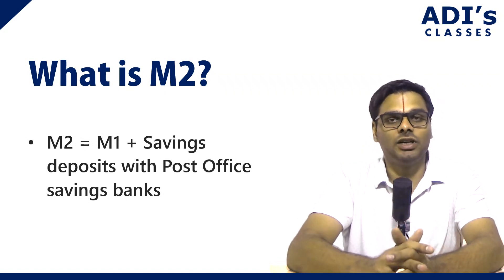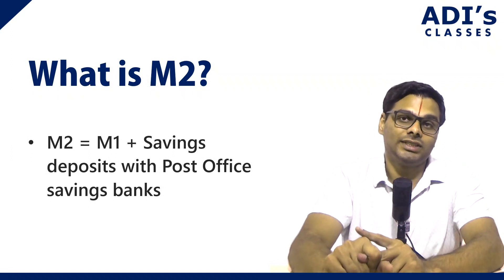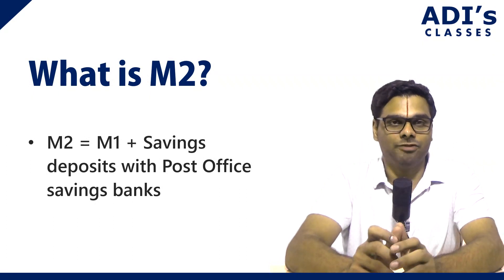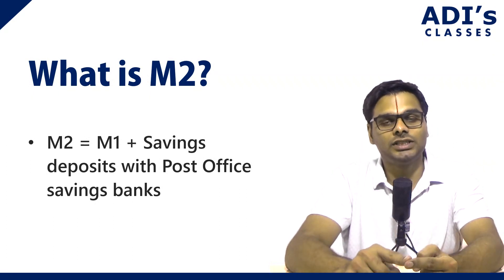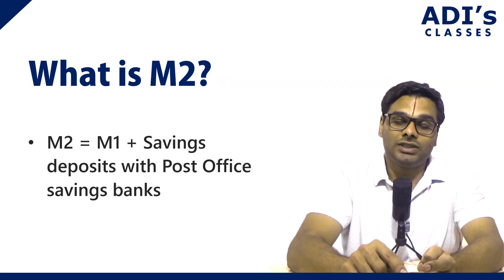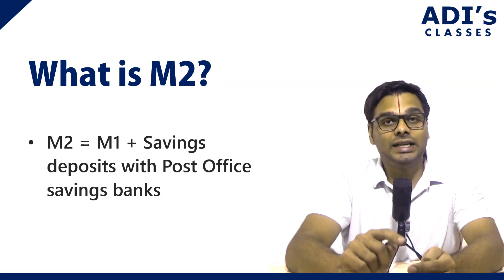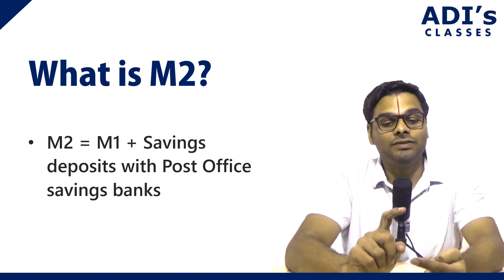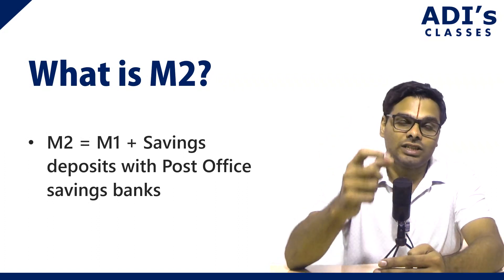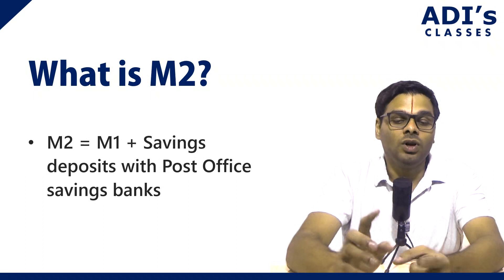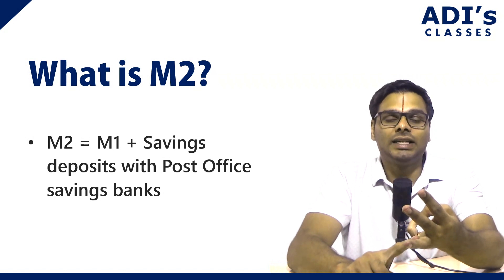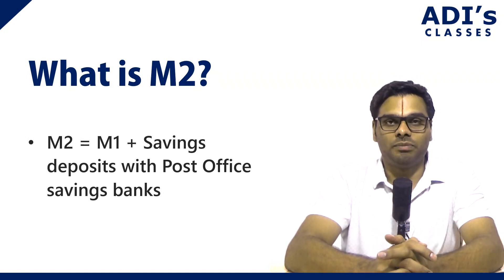M3 is equal to M1 plus net time deposits of commercial banks. So M3 equals CU plus DD plus net time deposits of commercial banks. In M1 we only had net demand deposits of commercial banks. In M3 we have net time and demand deposits of commercial banks plus currency in circulation with the public. So M3 equals currency held by the public plus net demand deposits of commercial banks plus net time deposits of commercial banks.